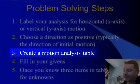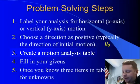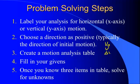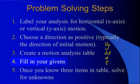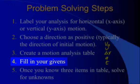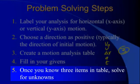Next, we'll create a motion analysis table where we write our v-naught, v, delta x, a, and t, and fill in the information we know, our givens. Finally, when we know any three items in this table, we can always solve for the other two. Let's see how this works in practice.